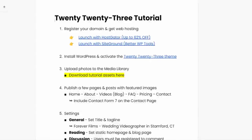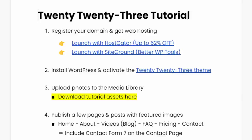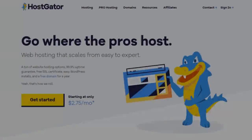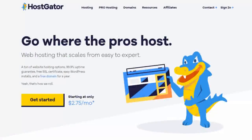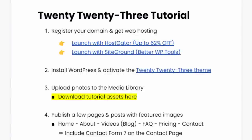Make sure you check out the links in the description below. You can download a copy of this guide — all of the customizations we're going to go through today. I'm using it as the playbook for this tutorial. If you don't have WordPress set up right now, you can get started with my two recommended website hosts: HostGator and SiteGround. HostGator is the most affordable for beginners. SiteGround offers better WordPress tools out of the box. I'll include tutorials in the description below on how to get started with both.